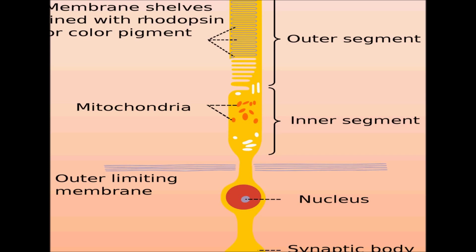Rods are incredibly efficient photoreceptors — more than 1,000 times as sensitive as cone cells. They can reportedly be triggered by individual photons under optimal conditions. The rod sensitivity is shifted towards shorter wavelengths compared to daylight vision, which accounts for the growing apparent brightness of green leaves in twilight.